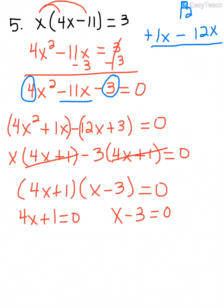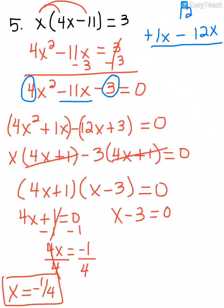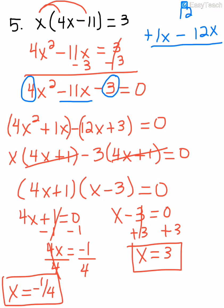For 4x plus 1, I subtract 1 and divide by 4, giving x equals negative 1/4. Then I add 3, so x equals 3. Those are my two solutions.